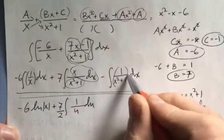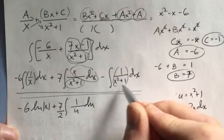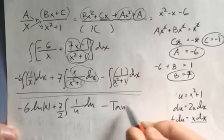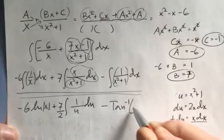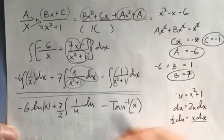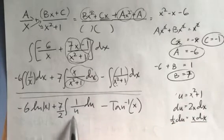of familiar. That looks an awful lot like an inverse tangent. This becomes minus tan⁻¹(x). I haven't done this yet though, so I have to do the integration. I'm going to just carry this down: -6 ln(x) + (7/2) ln